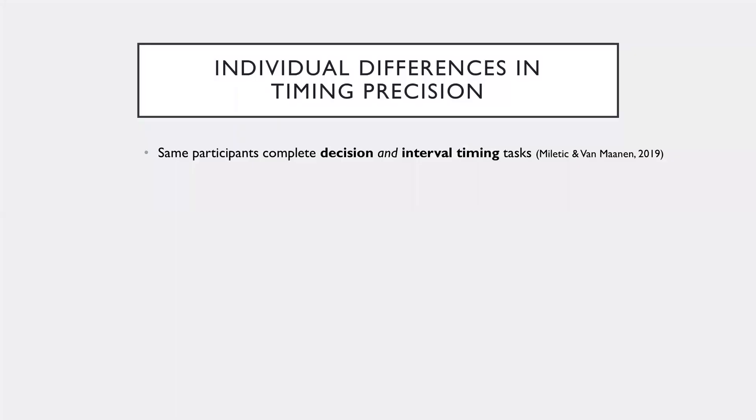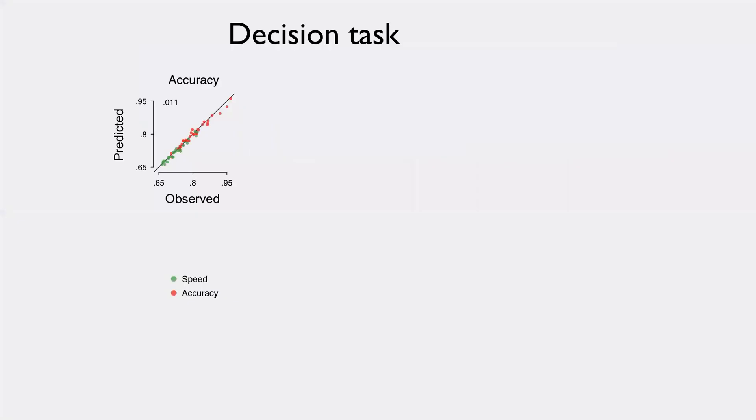So we did this by looking at individual differences in the timing precision. So we looked at a data set where the same participants completed a decision making task and an interval timing task.